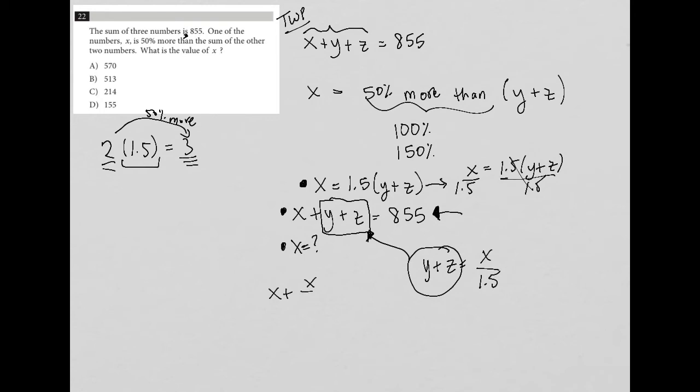Why is that valuable? Because now I can substitute. Since y plus z equals x divided by 1.5, I can replace y plus z in the equation with x divided by 1.5. I'd be left with x plus x divided by 1.5 equals 855.